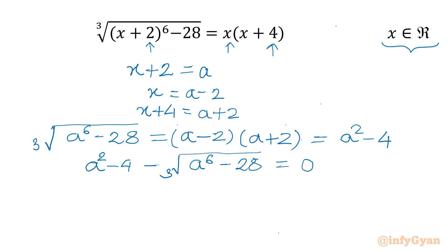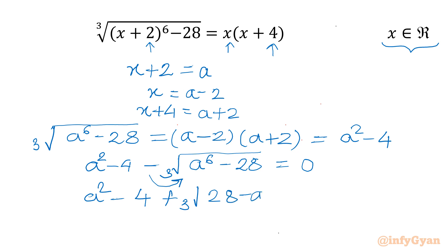Now I can take this minus into the cube root. So I will be writing a squared minus 4 plus cube root of (28 minus a power 6) equal to 0.